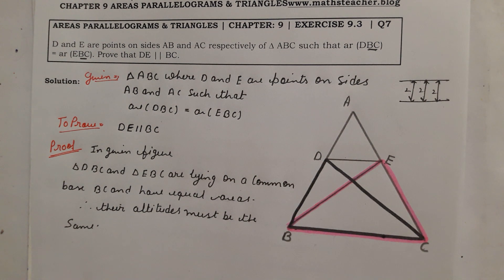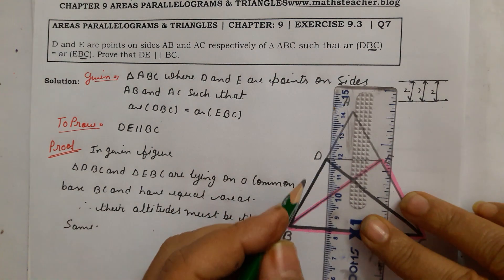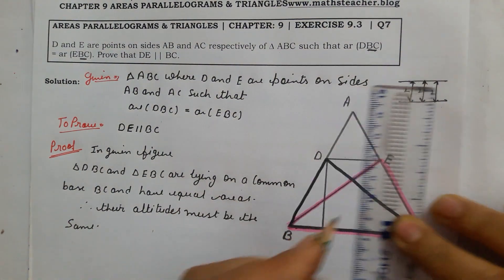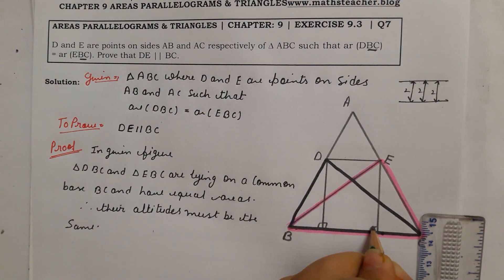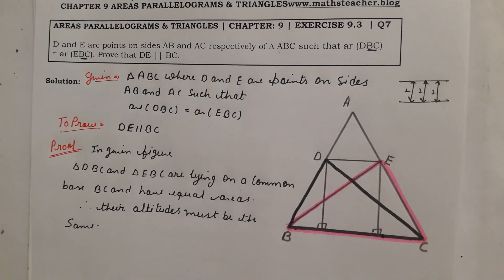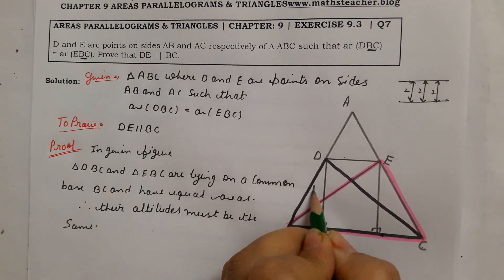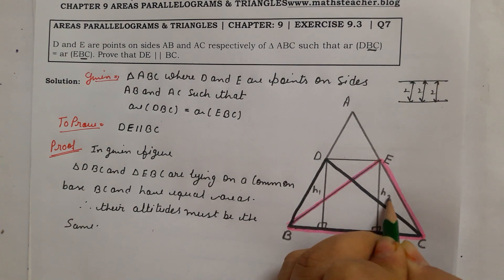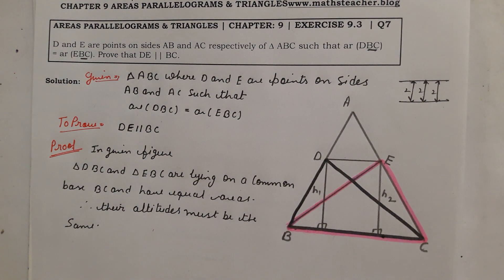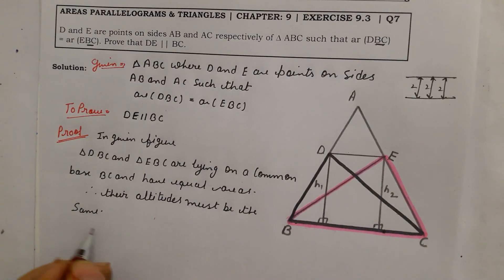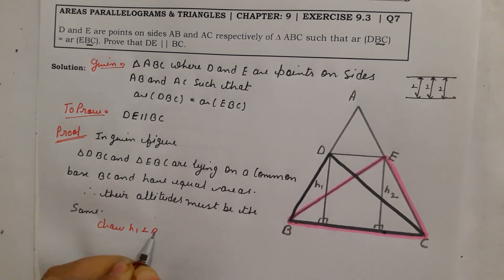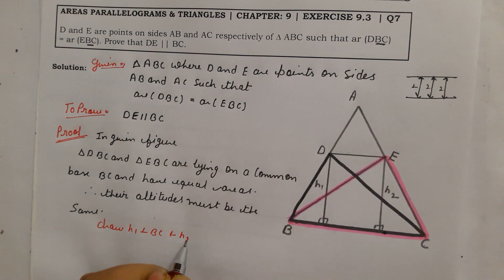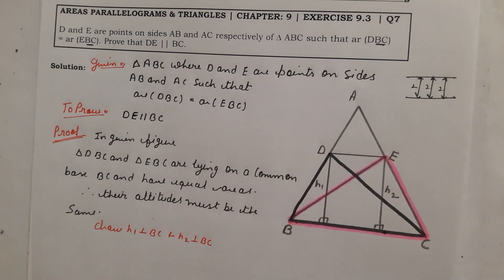To find the altitudes, draw both triangles and draw their heights perpendicular to BC — that perpendicular gives a 90-degree angle. Draw H1 perpendicular to BC from D, and H2 perpendicular to BC from E.